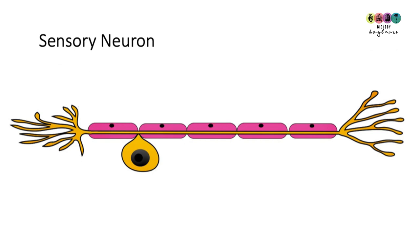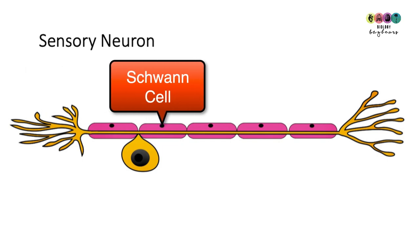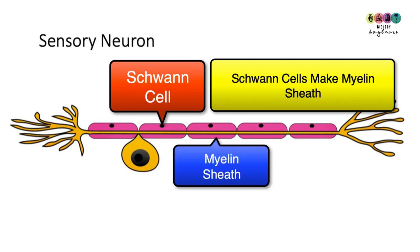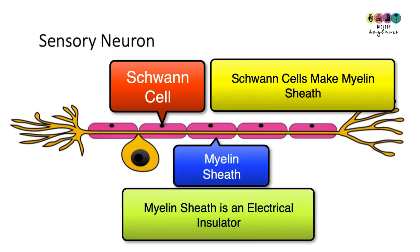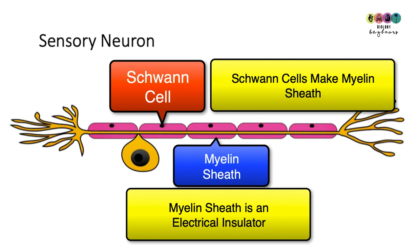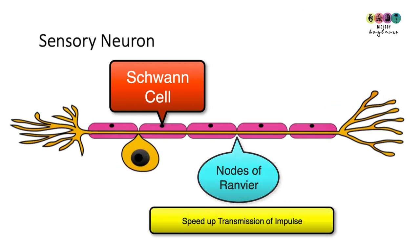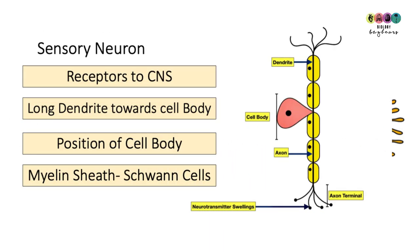Wrapped around the dendrite and the axon are special cells called Schwann cells, and they make a fatty substance called myelin. This myelin forms a sheath known as the myelin sheath, which acts as an electrical insulator. Gaps in the myelin sheath are known as the nodes of Ranvier, and they speed up the transmission of the impulse.